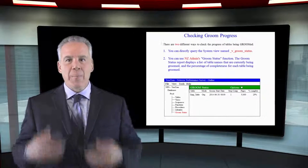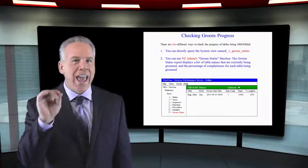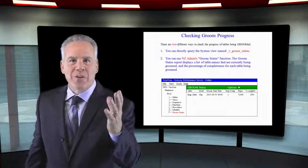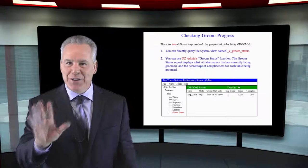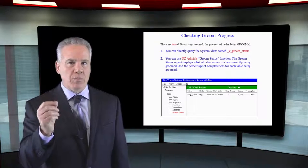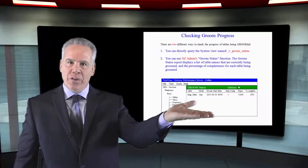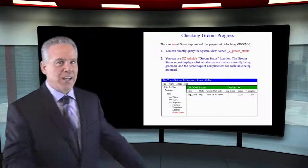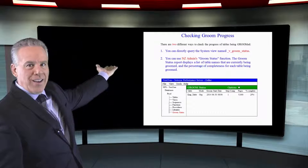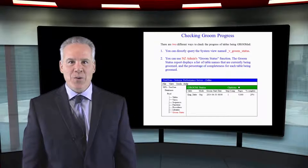What's really clever about the grooming process, it's a background process. You can actually have users running queries on the table and everything's going to be just fine. Now, you can check which tables are being groomed by two ways. NZ admin and that'll do it or you can use one of the system tables right there. And if you query that, it shows you everything that's being groomed.